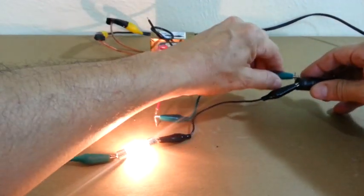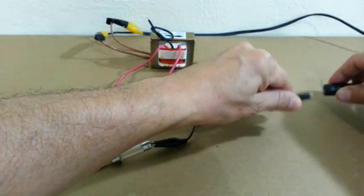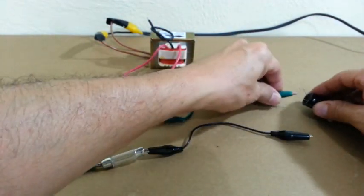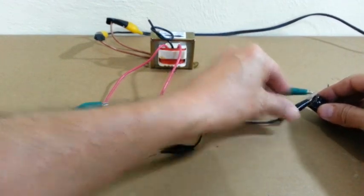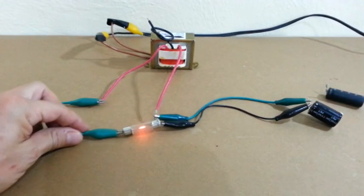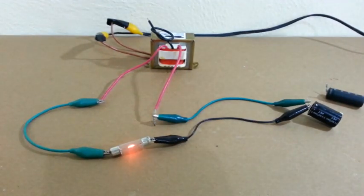Now let me put a capacitor of less capacitance. We will have lower brightness in the lamp. There you are.